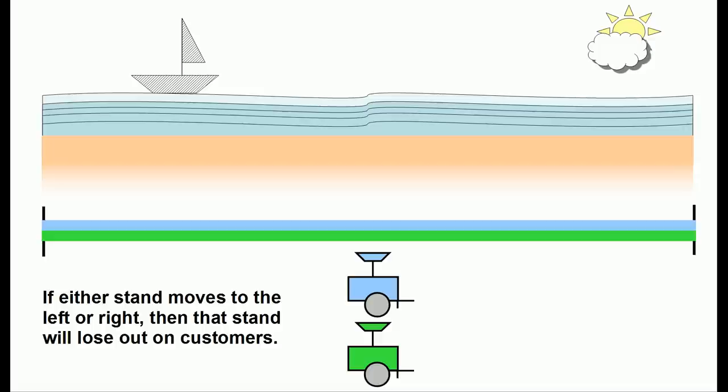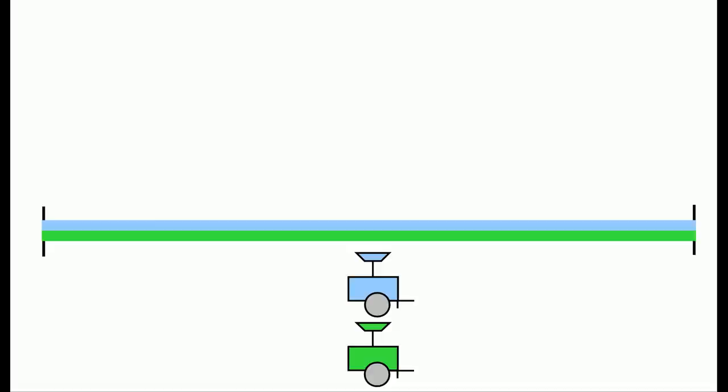And there's an interesting thing at this point: neither stand is going to want to move. If either stand moves to the left or the right, then that stand is going to get less than half the customers. So this is the solution to the game.